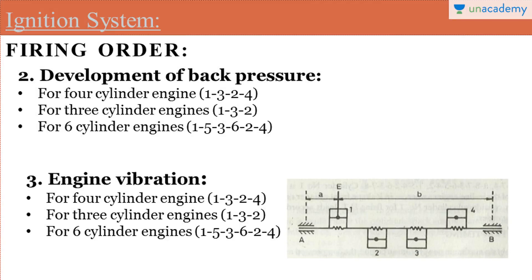The second factor is the development of back pressure. This condition is related to the exhaust from the cylinder. After combustion, exhaust gases are released from the exhaust pipe. If we consider the common continuous firing order 1, 2, 3, 4, after the 1st cylinder fires and its exhaust gases begin to sweep out, the 2nd cylinder fires before the exhaust of the 1st cylinder is complete.